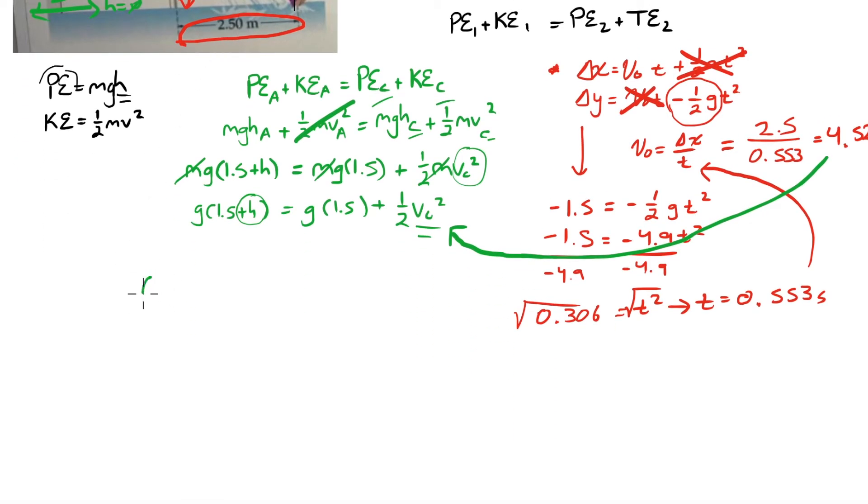So I have this expression. I'm going to start replacing g. We have 9.8 times 1.5 plus h is equal to 9.8 times 1.5 plus one half times 4.52 squared. I'm just going to shut up for a second while I go ahead and solve this for you.